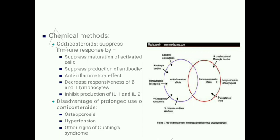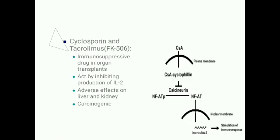The disadvantage of prolonged use of corticosteroids is that it leads to osteoporosis, hypertension, diabetes, and other signs of Cushing's syndrome. Another drug used for immunosuppression is cyclosporine, as well as tacrolimus, which acts by inhibiting the production of interleukin 2, but has adverse effects on the liver and kidney and is carcinogenic.